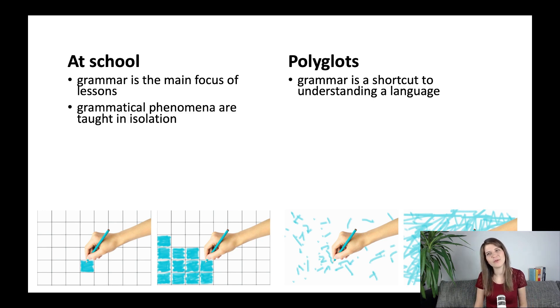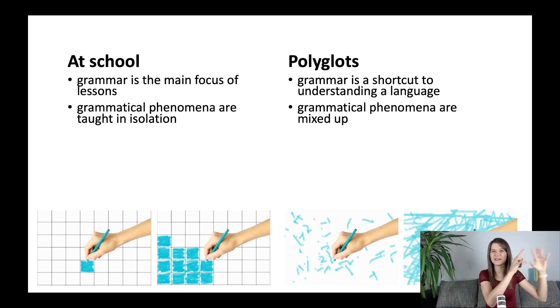Grammatical phenomena at school are taught in isolation. So this is the one square and then we move to the next one and then we move to the next one. Polyglots mix up the phenomena and mixing up stuff is actually incredibly useful for your brain. You remember stuff long term when you learn a little bit of this and that and this and that and you come back to the original topic and then a little bit of that. Mixing up is really really useful. So I believe that that's why polyglots learn grammar much much faster and in a much more effective way.